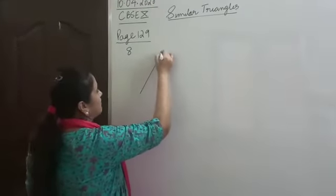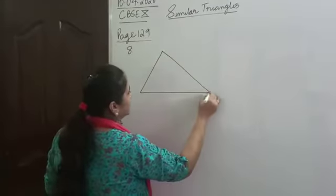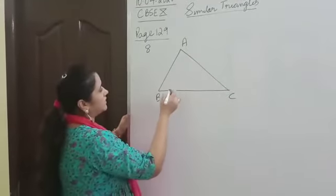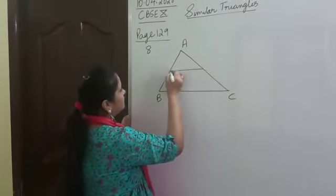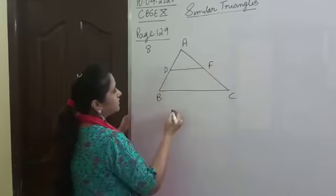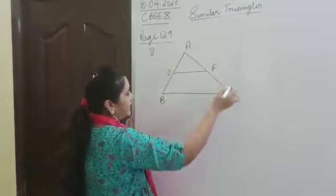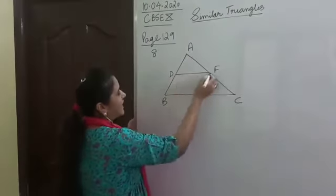So, according to the statement, we have a triangle. Let's call the triangle ABC. Now, there is a line segment which bisects two sides of this triangle. So, let's say DF is a line segment which bisects the sides AB and AC at D and F.